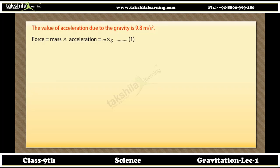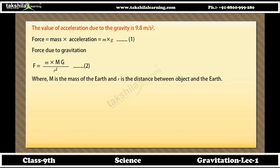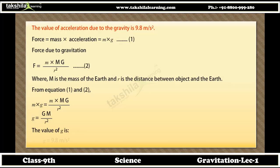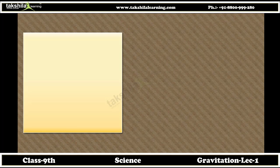The value of acceleration due to gravity is 9.8 m/s². Force is equal to mass into acceleration: F = m × g (Equation 1). Force due to gravitation: F = M × m × G / R² (Equation 2), where M is the mass of the earth and R is the distance between the object and the earth. From equations 1 and 2: g = G × M / R². The value of g is 9.8 m/s².